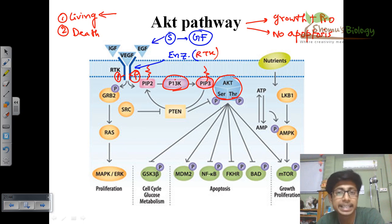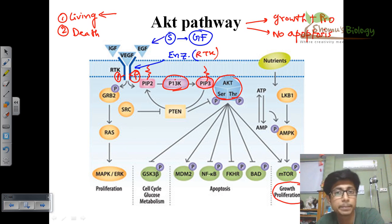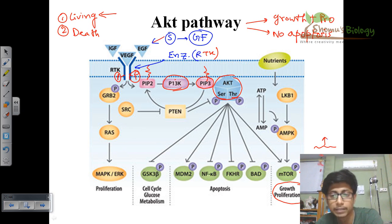Once AKT is activated, it can perform three important types of tasks. The first task is to help in growth and proliferation. AKT does this by phosphorylating another set of proteins called mTOR. Once mTOR is phosphorylated, it recruits transcription factors, which help produce mRNA and ultimately produce the desired proteins. This leads to proper cell growth and proliferation.